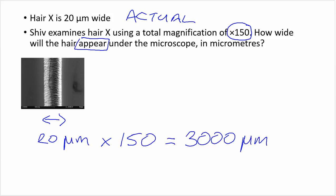Now the question doesn't ask us this, but an extra challenge would be to convert our answer in micrometres to millimetres. We know there's 1000 micrometres in a millimetre. So we need to divide micrometres by 1000. 3000 divided by 1000 is going to give you 3 millimetres.